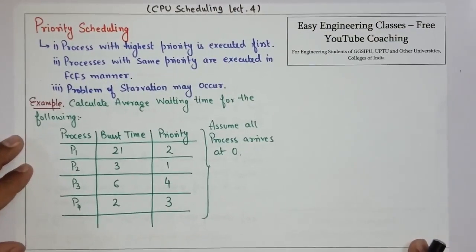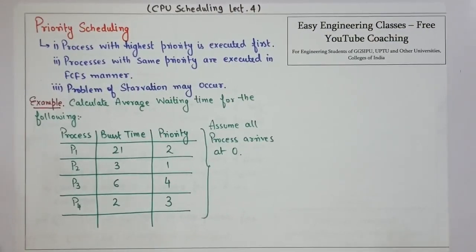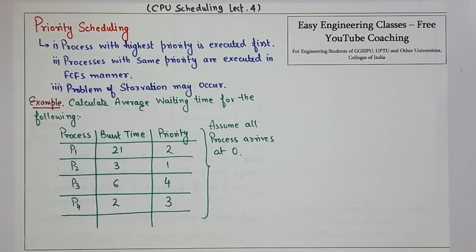In this video lecture we are going to see priority scheduling. It is a type of CPU scheduling algorithm in which the process with the highest priority is executed first. If two processes have the same priority, then they are executed on the basis of first come first serve manner.